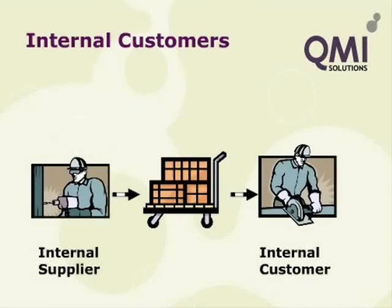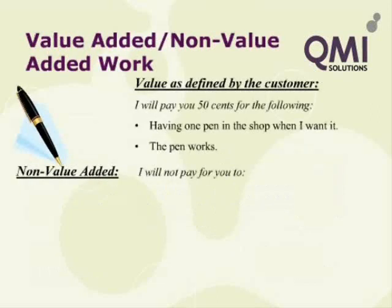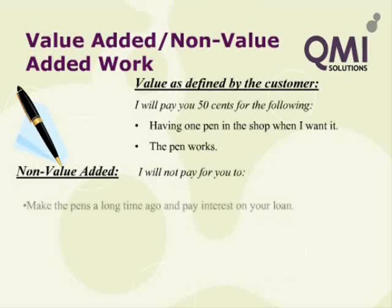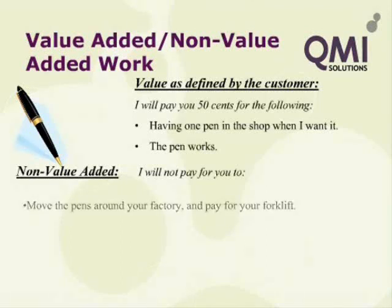The first principle of Lean is to define value as seen by the customer. After all, businesses survive by providing value to their customers. Lean businesses explicitly define what it is they are providing to their customers, then work to improve the ways this is achieved. The tools presented in this section will help you to discuss and define customer value.